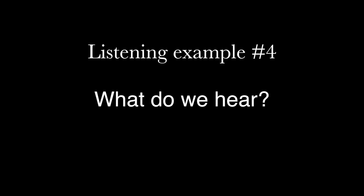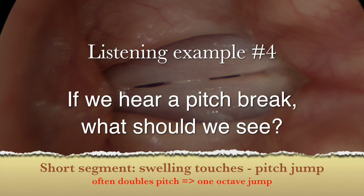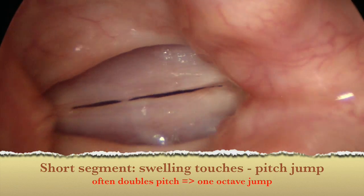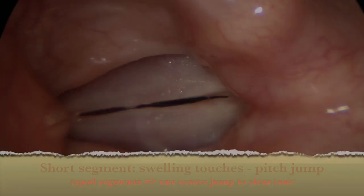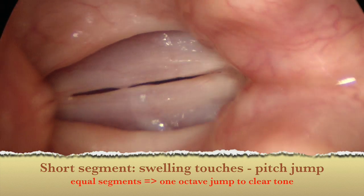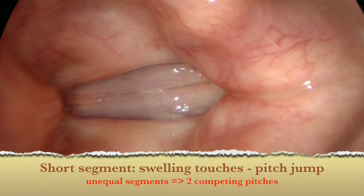Let's listen to a different finding on the same vocal task. There's a sudden doubling of pitch — a pitch break, often an octave — which will correspond with cutting the vibratory segment in half. Let's watch and listen in slow motion. And if the segments are unequal in length, we get diplophonia.